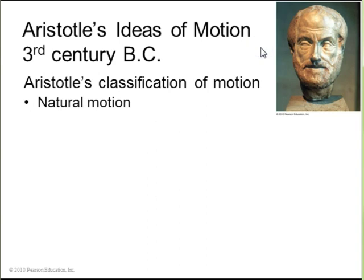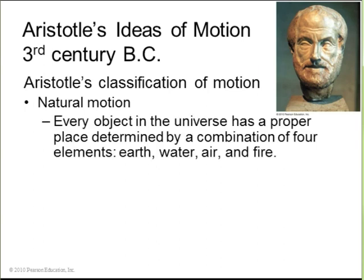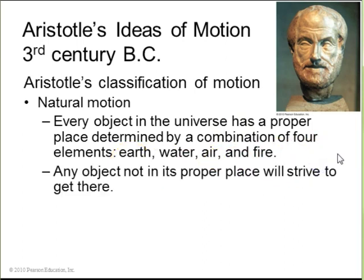Basically, Aristotle divided motion into two main classes, natural motion and violent motion. The idea of natural motion is that every object in the universe has some proper place determined by what it's made out of. Earth, water, air and fire being the four elements. So any object not in its proper place will strive to get there.